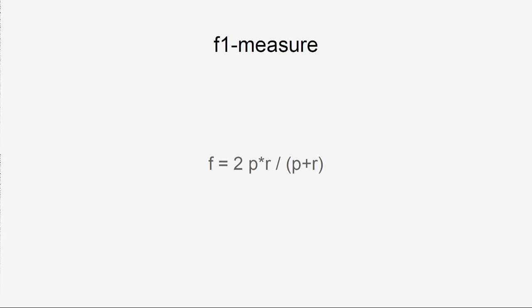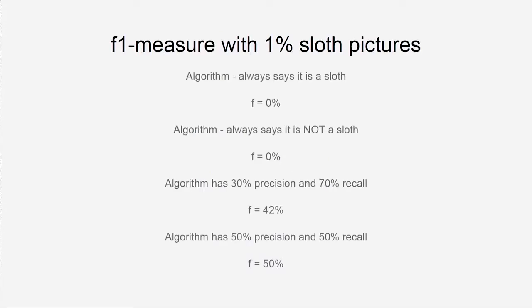Precision and recall are not good by themselves, which is why F-measure is typically used — it's a combined average of precision and recall. If the algorithm always says there is a slot, precision is zero, so F-measure is zero. If it always says there is no slot, recall is zero, so F-measure is zero again. Like a good average, if precision and recall are equal, F-measure equals them. But if we have 30% and 70%, the arithmetic average is 50% while F-measure gives 42% — it is always closer to the lower value, penalizing imbalance.